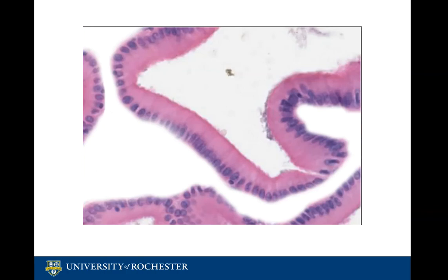Tubuloalveolar mucous glands are important in the secretion of sulfamucins, sialomucins, and neutral mucins that have many functions including protecting tissues and also helping to regulate some of the biological processes that occur within the body.